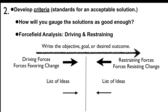One way to approach this is called the force field analysis technique — a method for analyzing a problem. It identifies forces that increase the likelihood the desired goal will occur, and analyzes the forces that decrease the probability that the goal will occur. Forces favoring change are called driving forces, while forces resisting change are called restraining forces. In this T-chart, you write the objective, goal, or desired outcome, list driving forces that favor the change, and list restraining forces that are resistant to that change.